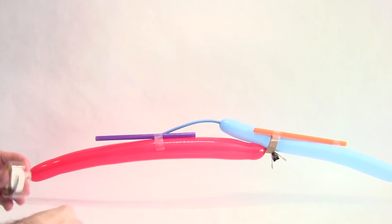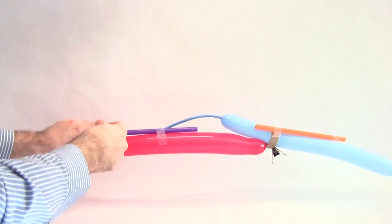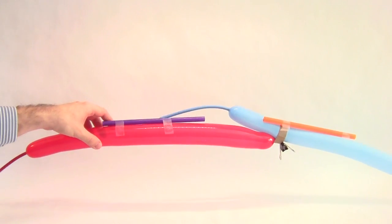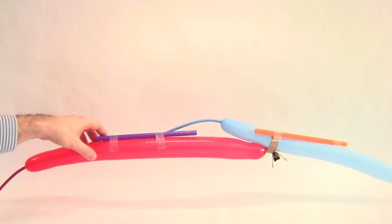Next, tape the balloons to the straws, doing your best to make sure they remain pointed in a straight line. Do not tape the two balloons to each other as this will prevent the two stages of your rocket from separating.